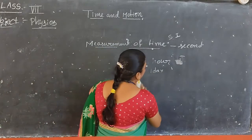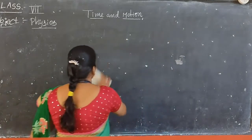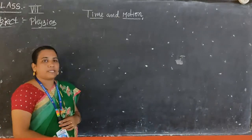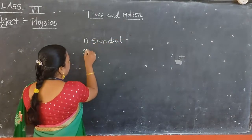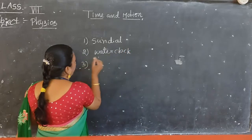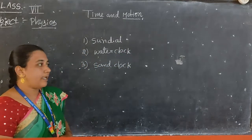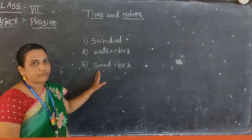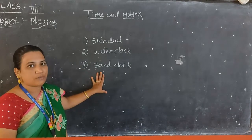As we discussed before, in the olden period they were not having any clocks, but they were using certain devices to measure time. The devices they generally used in the ancient period to measure time were: the sundial, the water clock, and the sand clock. They used these devices to measure time.